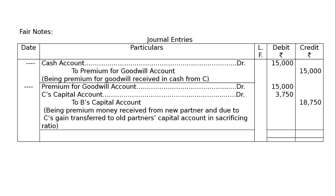Being premium money received from new partner and, due to C's gain, transferred to old partner's capital account in sacrificing ratio — because C is not sacrificing, she is gaining. Hence, C's capital is also debited by Rs. 3,750. The totaling will be Rs. 33,750 for both the debit and credit columns.